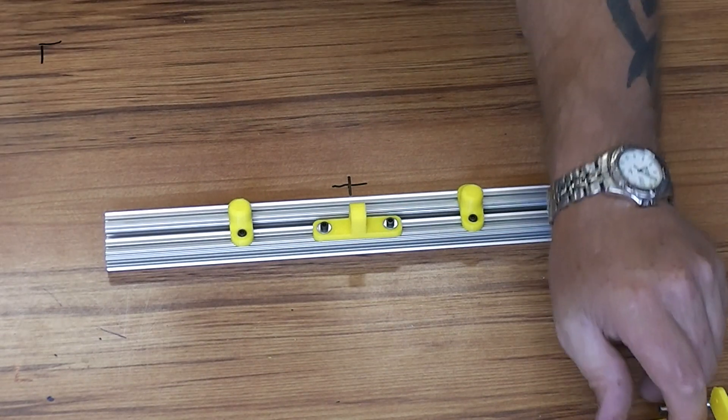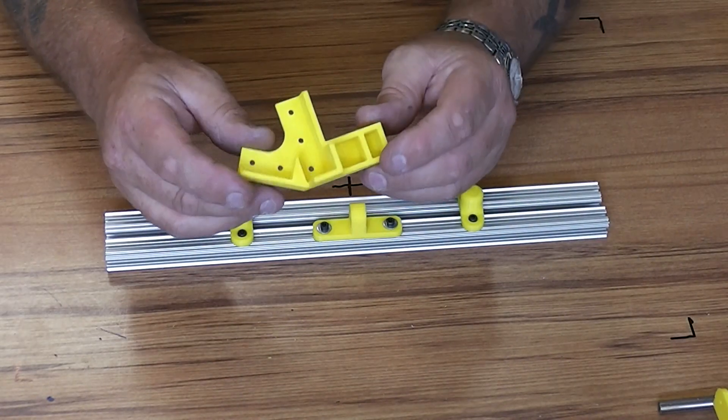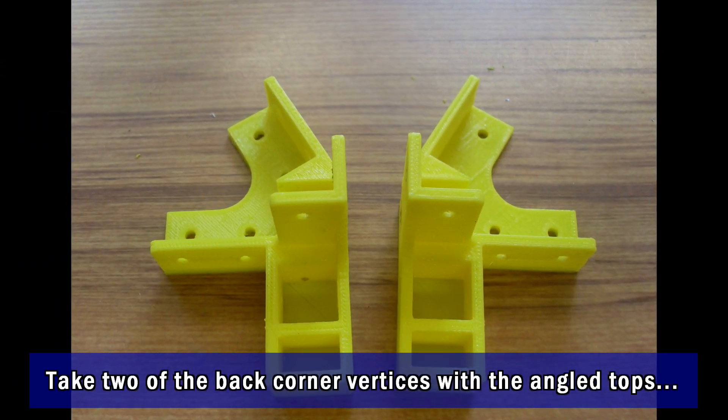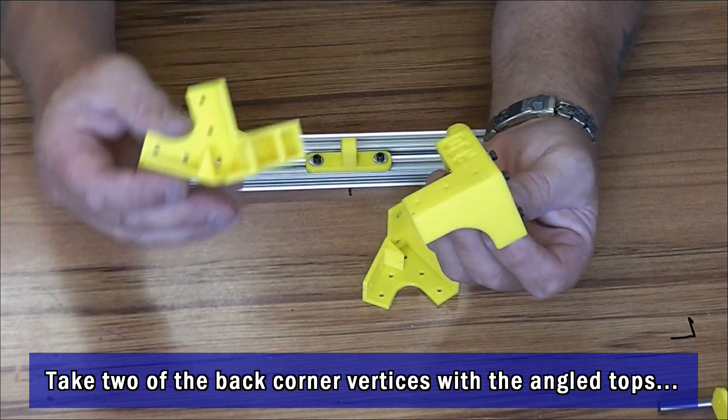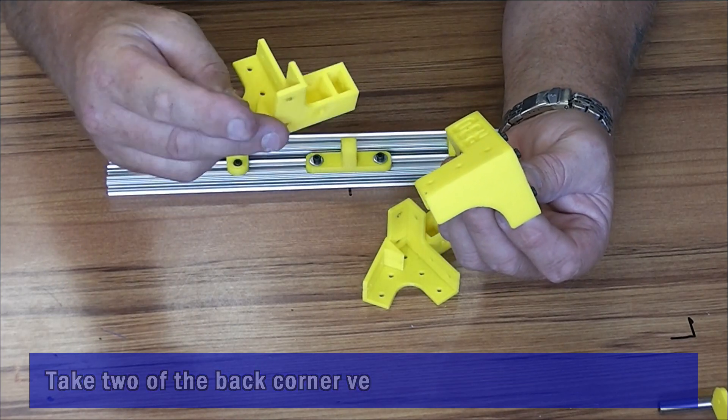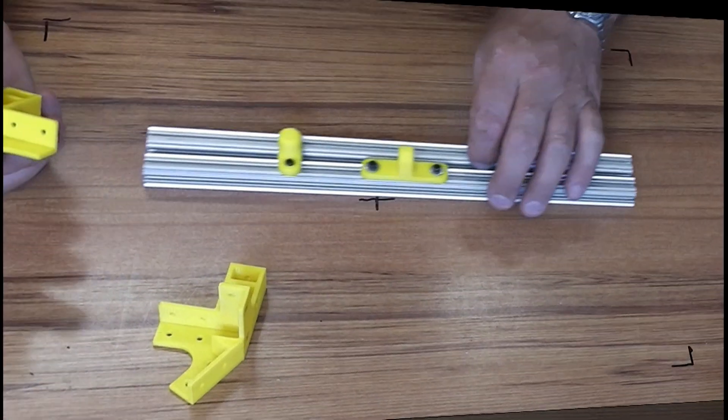So then we're going to put the ends on. The ends look like this. Well, there's a front end. It's pretty much the same except it doesn't have the vertical upright on it, so it doesn't really matter which one we start with.